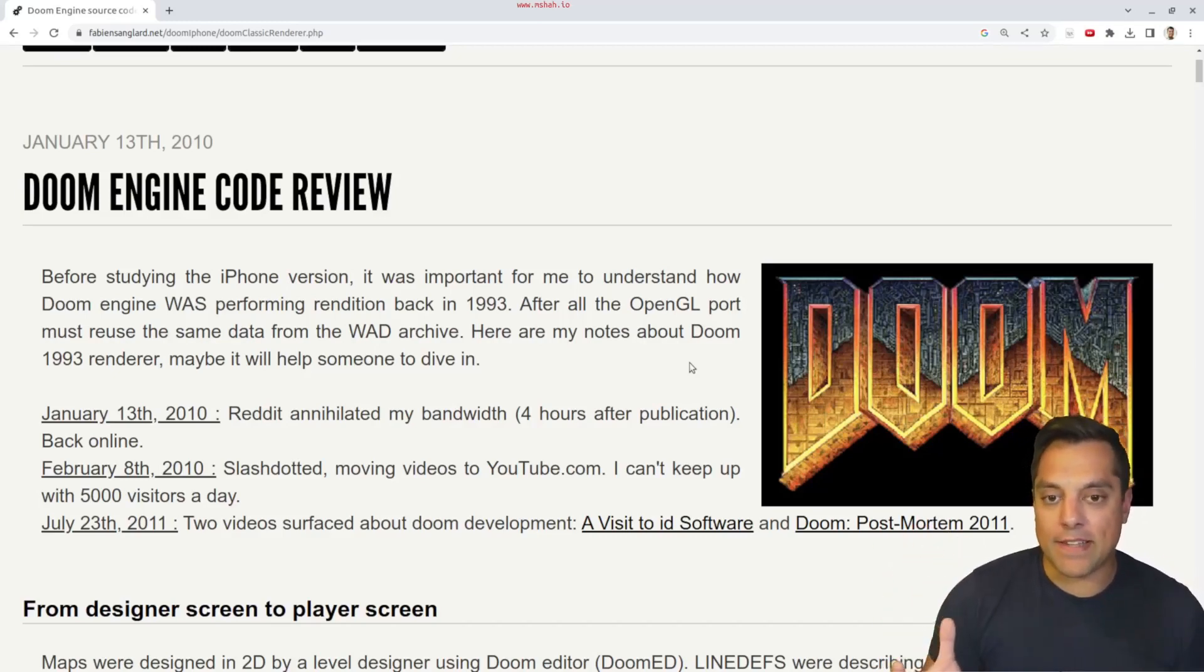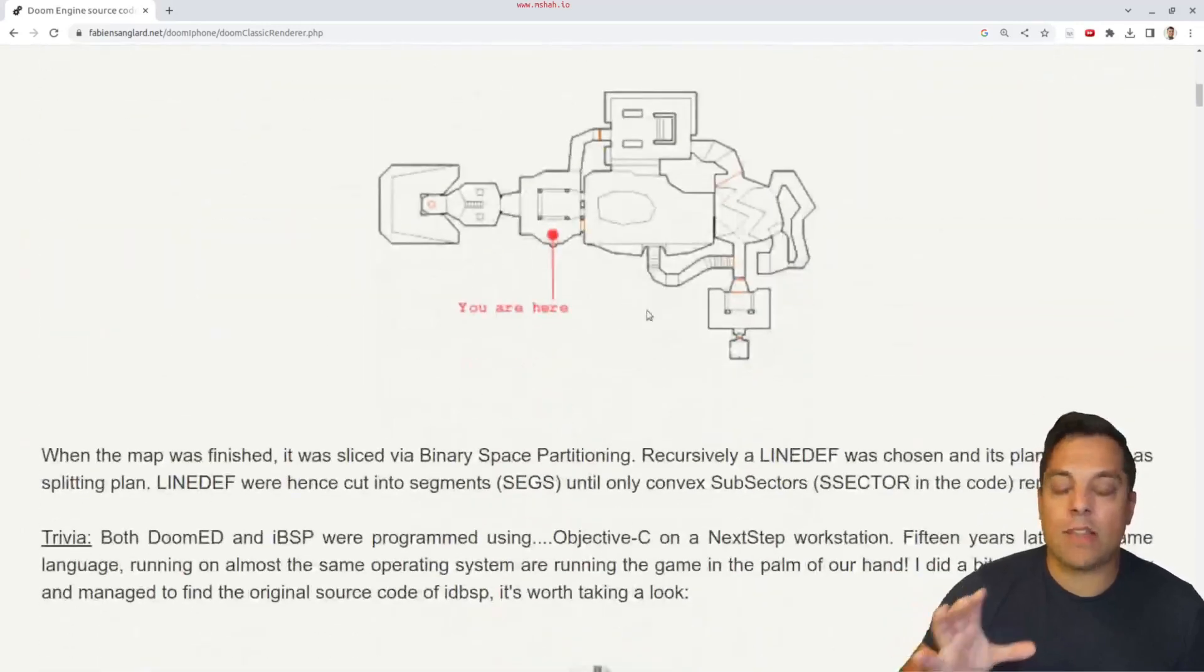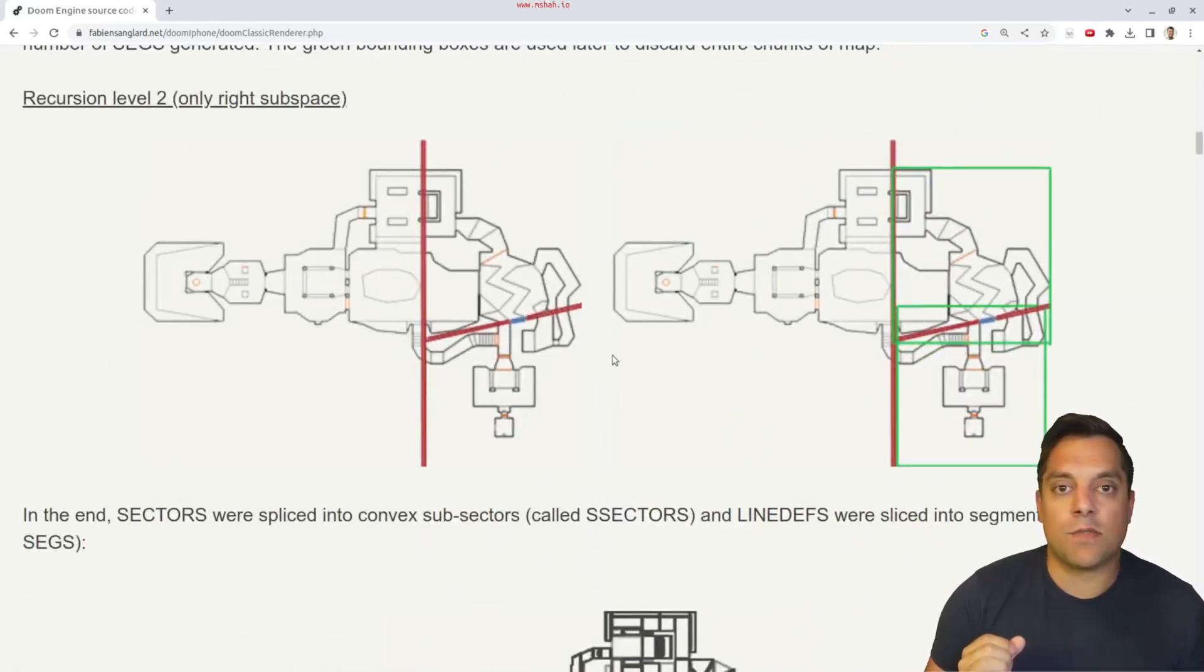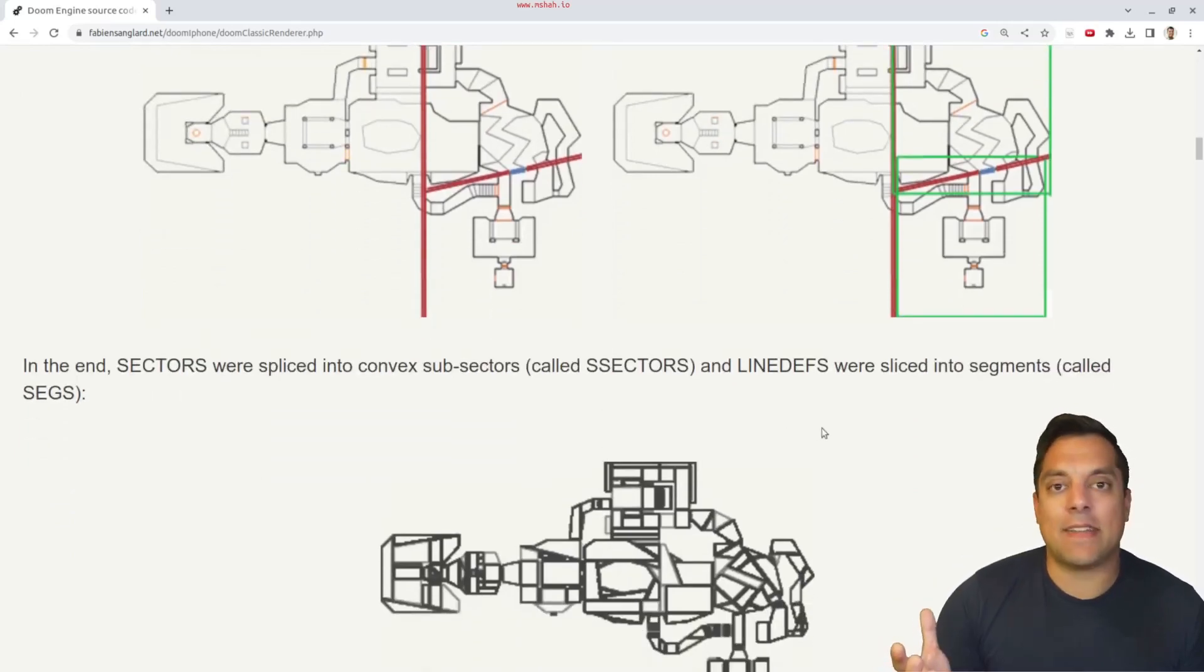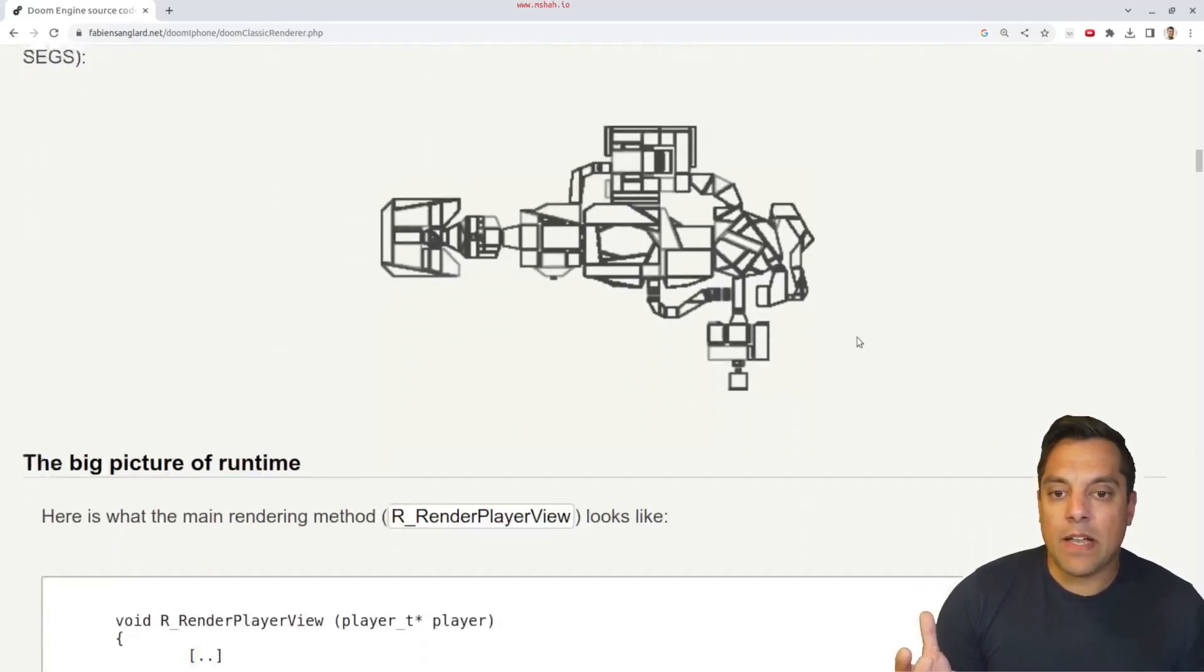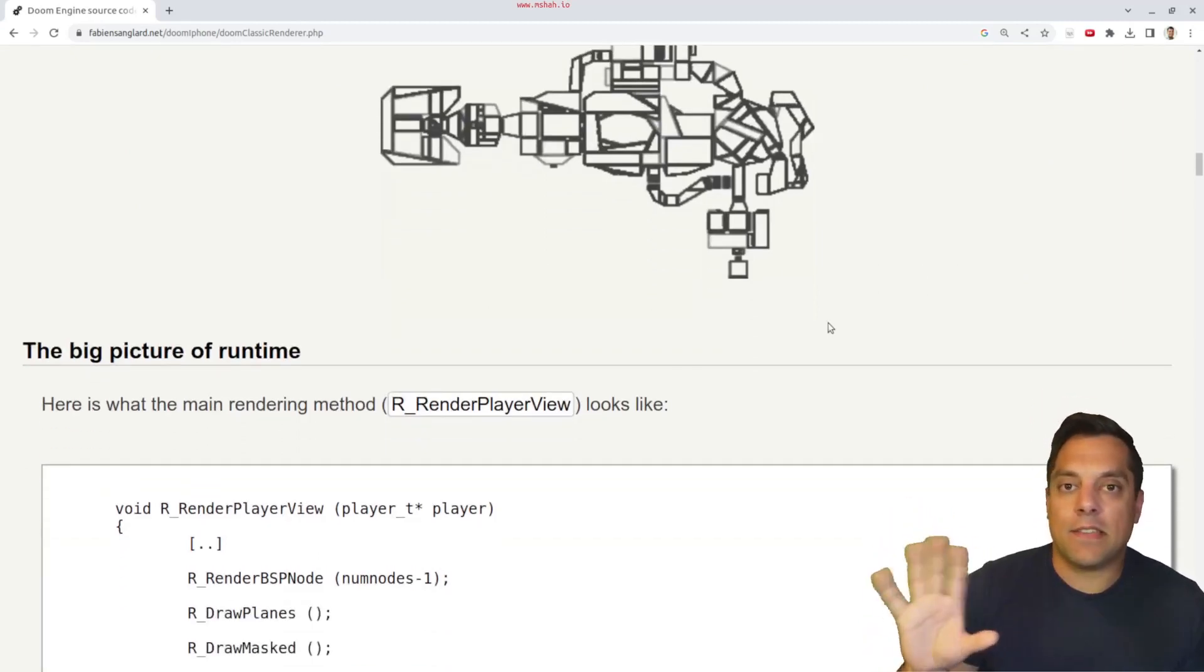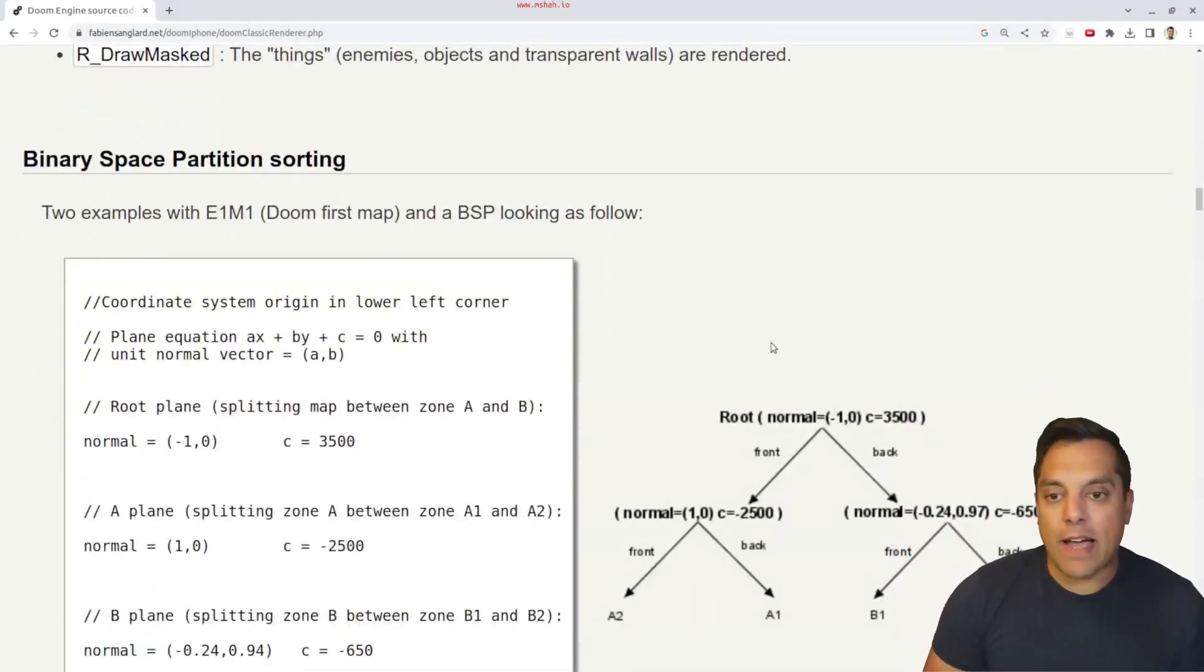One of these articles that he did in 2010 was on the DOOM engine code review. He talks about a lot of the different things like the level design, the different tools used, some of the data structures like binary space partitions, which were a data structure that had existed for quite some time for solving problems in graphics and visibility but was applied very nicely in the DOOM series and has been sort of a staple in game development.